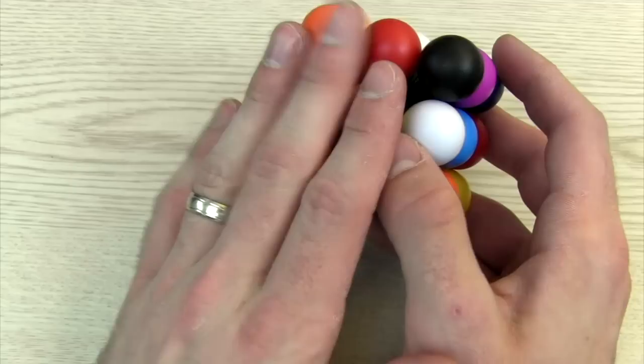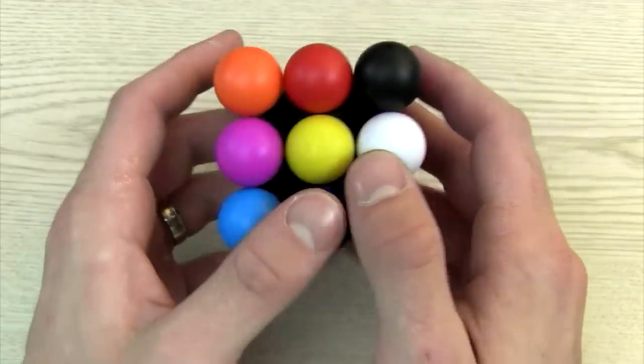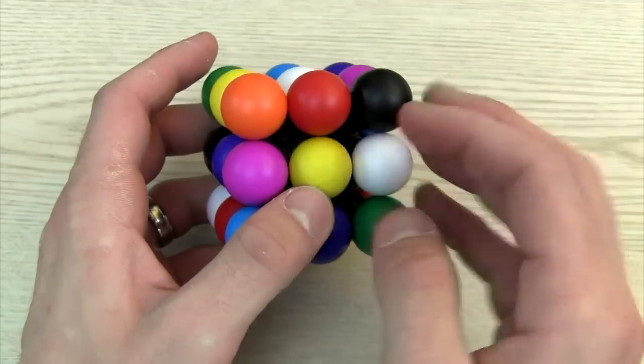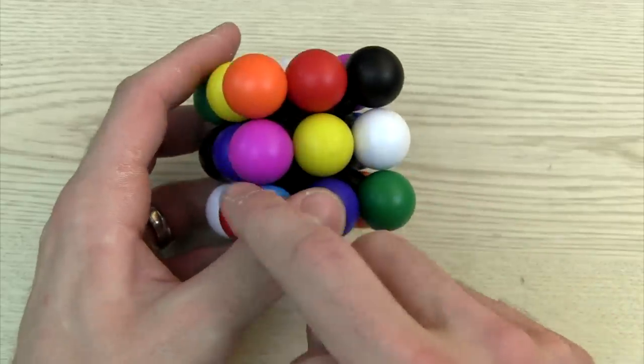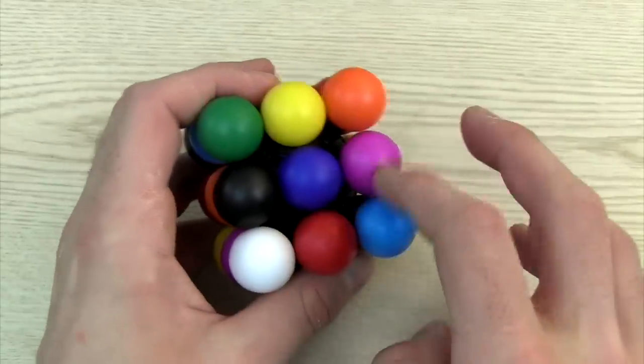The way it works is each side works kind of like what you would do with a Sudoku, putting one through nine in each box, but you can only have one of each color on each side.